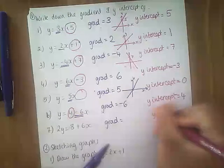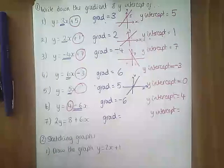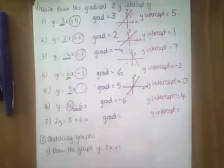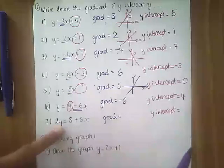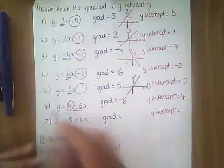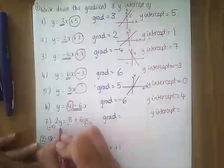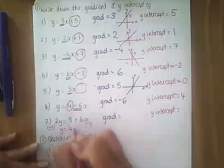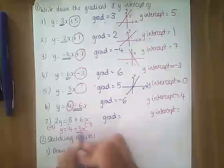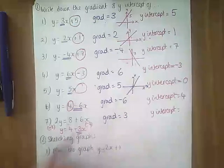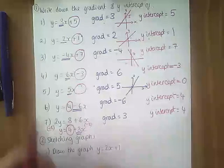Our last one: remember just a minute ago when we were talking about the general equation of a straight line — I said you need to have it in the form y equals mx plus c, and if it's not, you have to make it in that form. The problem here is that this isn't y, this is 2y. So how do I get y on its own? I divide everything by 2. So if I divide everything by 2, I get y equals 4x plus 3. So my gradient is 3 — that's the number in front of x — and the y-intercept is 4.